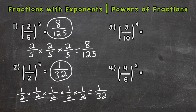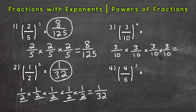Number three: three-tenths to the power of four, or to the fourth power. So let's expand three-tenths out four times and solve. Three times three is nine, times three is twenty-seven, times three is eighty-one. Now for the denominators of ten: ten times ten is a hundred, times ten is a thousand, times ten is ten thousand. So we get eighty-one over ten thousand.